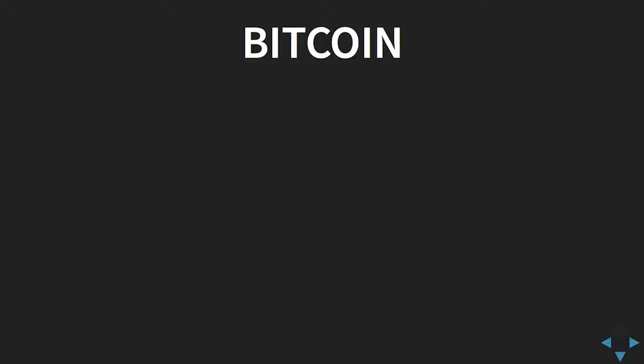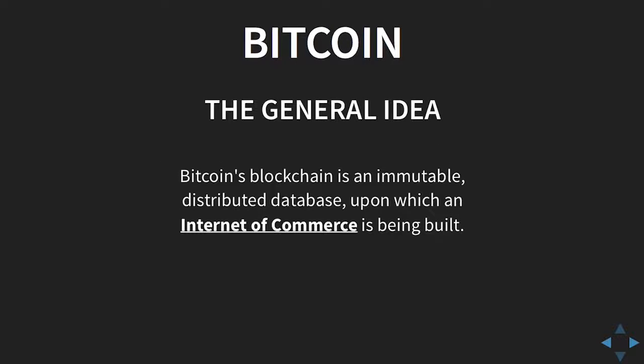So what is Bitcoin? The general idea: it's an immutable database. It's spread out — everybody keeps a copy of the database, and you can verify proofs against that database. And we're building an internet — not just an internet of things, but an internet of commerce. We're building payment systems, stored value systems, smart contracts. Everything you imagine in the current web, in the current internet, in the current technology world is being built on top of this immutable database now.